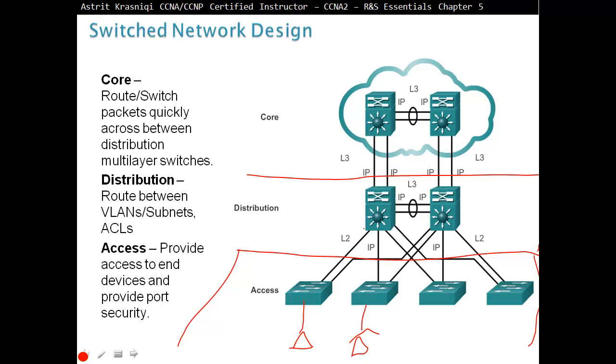Then we have the Layer 3 core, which routes switch packets quickly between distribution multi-layer switches.